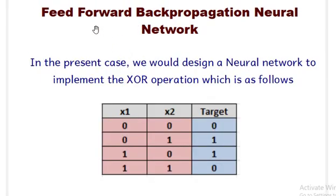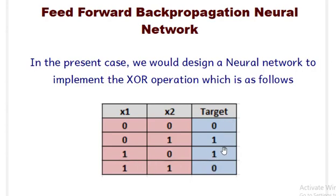In our case, we'll be using the XOR operation in this Python program. In the XOR operation, we have two inputs: 0,0 / 0,1 / 1,0 / 1,1, and the targets we should get are 0, 1, 1, 0 respectively. So when input is 0,0 the output should be 0; when input is 0,1 we must get 1; when input is 1,0 we must get 1; and for 1,1 we must get 0. This is our target, and after running the program, we will match the target with the output we are getting.